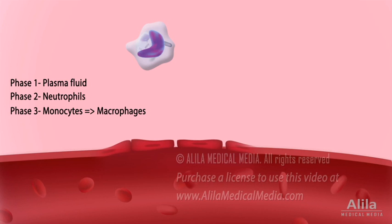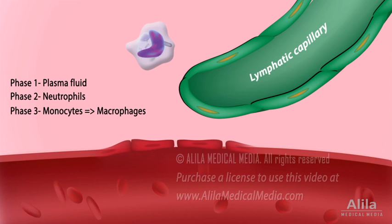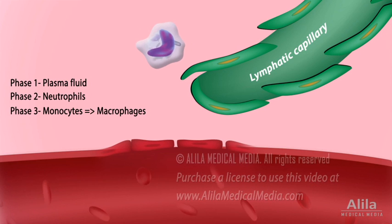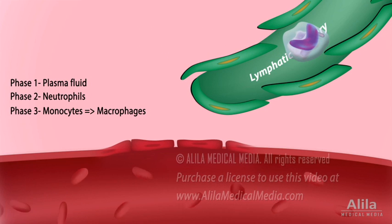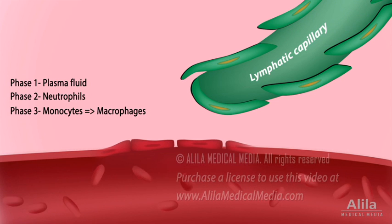Macrophages that have completed their mission are cleared from the tissue by the lymphatic system. Accumulation of fluid increases pressure on lymphatic capillaries, forcing open their one-way valves, facilitating lymphatic drainage. Lymph containing debris-laden macrophages passes through a number of lymph nodes and is filtered clean before it returns to the bloodstream.